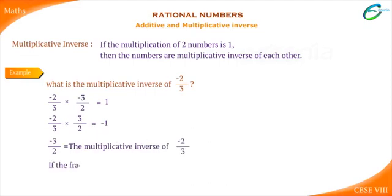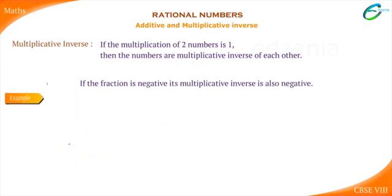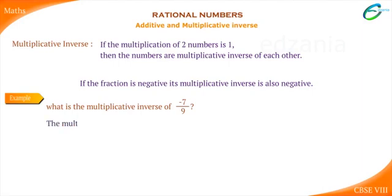So, if the fraction is negative, its multiplicative inverse is also negative. Another example: what is the multiplicative inverse of minus 7 upon 9? The multiplicative inverse of minus 7 upon 9 is minus 9 upon 7.